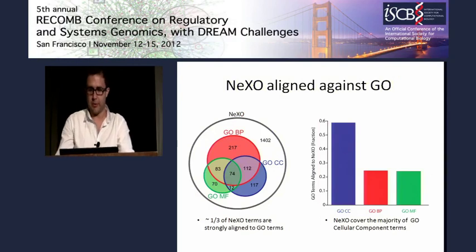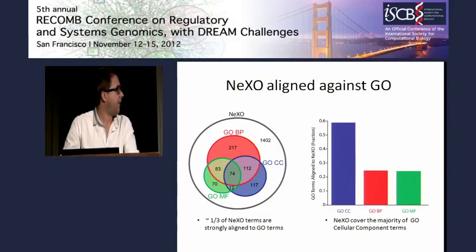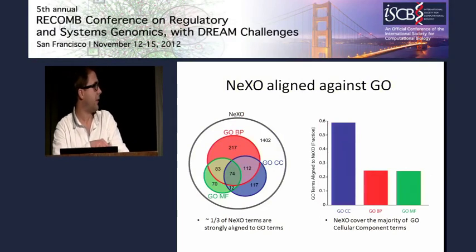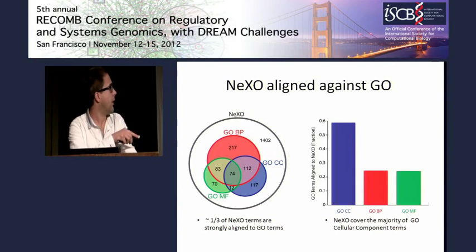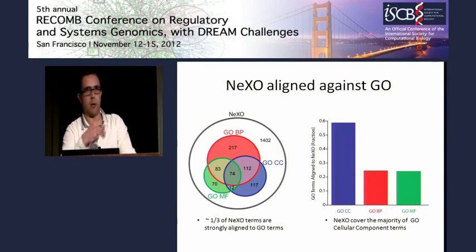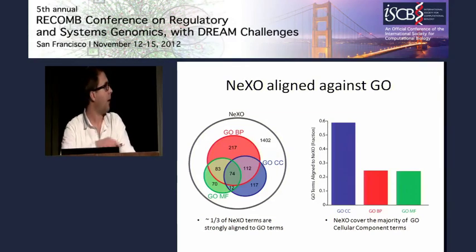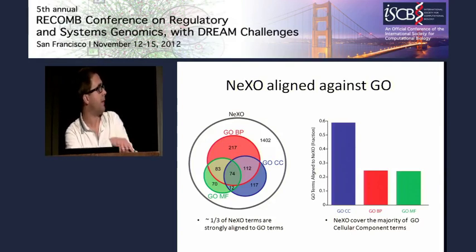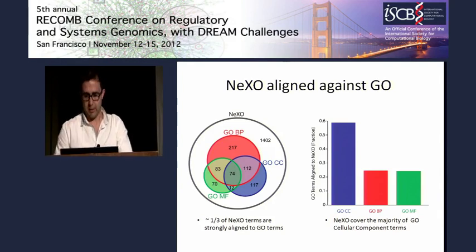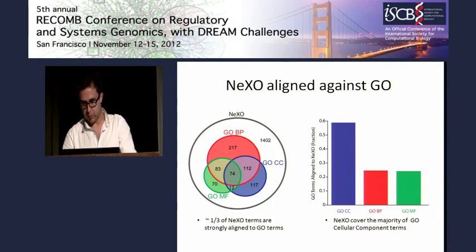How does NEXO compare to GO? In general, we find that around a third of the ontology extracted from network data corresponds to GO — whether to biological process, cellular component, or molecular function. Looking the other way, around 60% of GO cellular component, and around a quarter of biological process and molecular function, we are actually able to identify purely from network data.